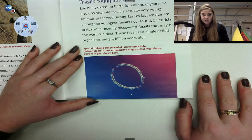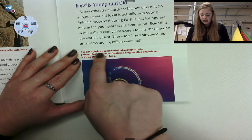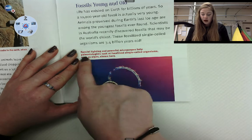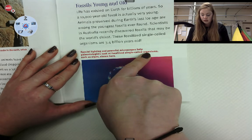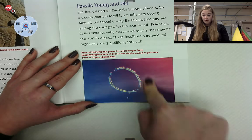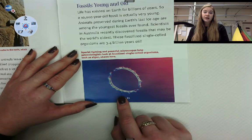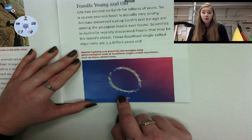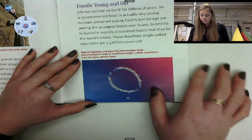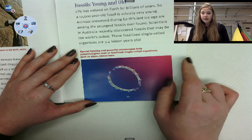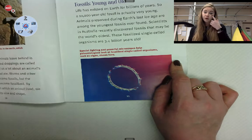These fossilized single-celled organisms are 3.4 billion years old. This is such a strange-looking fossil — it's purple and pink and a little bit shiny. Special lighting and powerful microscopes help paleontologists look at fossilized single-celled organisms such as algae. Algae is basically invisible, so this is being held under a microscope. We talked about microscopes earlier in the year — those are special tools scientists use to help see things that are too small to see with your human eye.